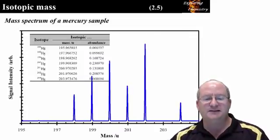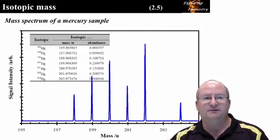This is the mass spectrum of a single sample of mercury. The inset shows the different isotopes of mercury. For each isotope, the mass and abundance in the sample are reported to six decimal places.